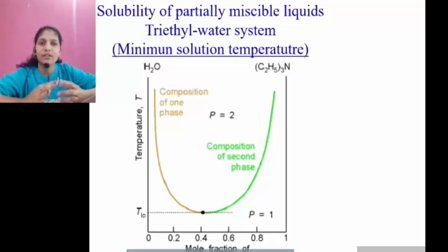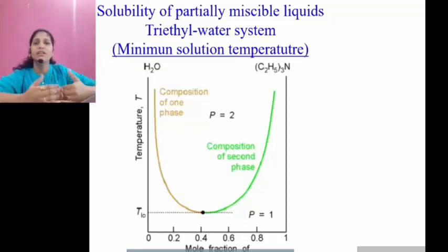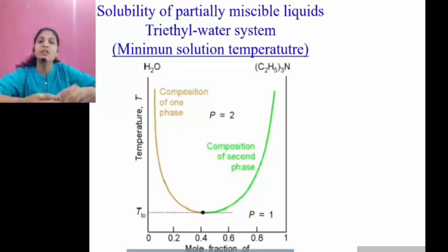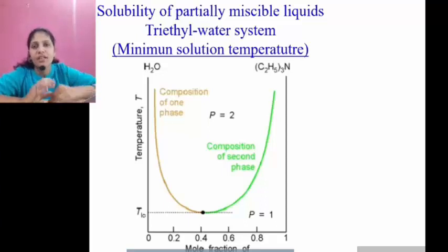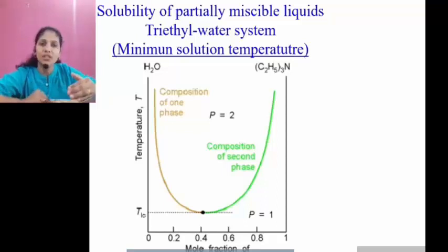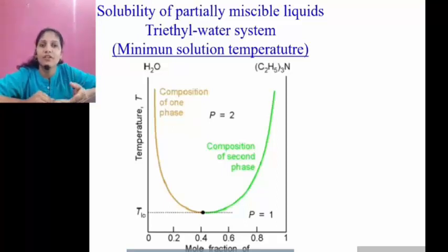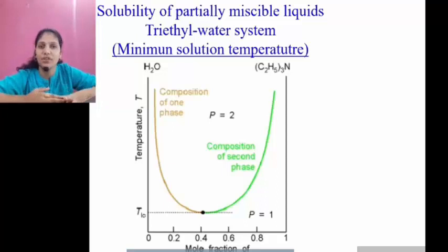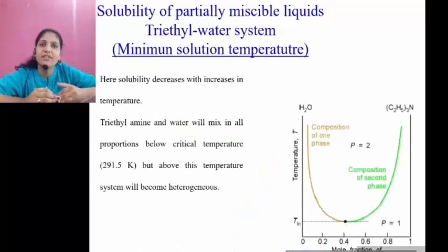Now let's move towards the minimum solution temperature. This diagram is the example of the triethylamine-water system, which belongs to the class of minimum solution temperature — meaning at low temperatures different compositions are miscible, but at higher temperatures they are immiscible. Below the critical solution temperature there is one phase — a homogeneous layer. Within the curve there are two phases: triethylamine in water, and water in triethylamine, depending on composition.